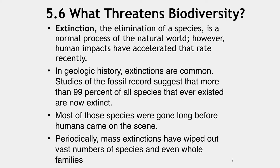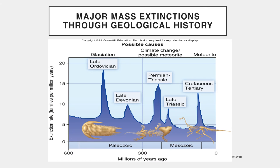Periodic mass extinctions have wiped out entire species and families of organisms. This slide shows what we believe to be major mass extinction events throughout geologic history. On average, we lose about five to seven families per million years. However, during mass extinction events, we can lose upwards of 20 families per million years.